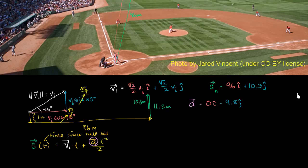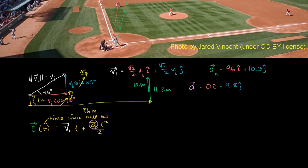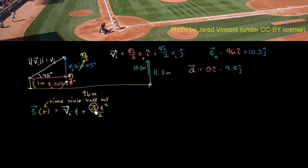We set up the formula derived in multiple previous videos — displacement as a function of time, initial velocity, and acceleration. Now we're ready to apply it. We've expressed all of our vectors in engineering notation, as scaled multiples of i and j vectors, so we can handle both the horizontal and vertical components at the same time.